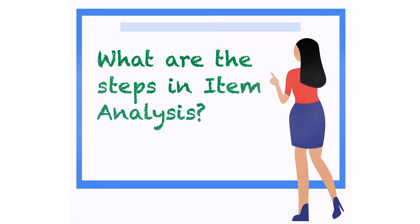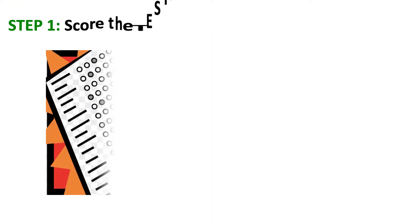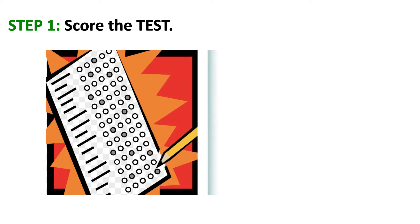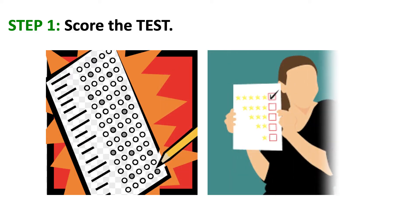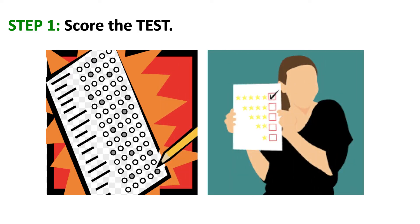So what are the steps in item analysis? Step 1: Score the test. For large-scale testing, answer sheets are usually scanned by a machine to capture test takers' item responses. Manual scoring is often done for classroom tests wherein the pupil's answers are checked against a prepared scoring key. They are considered correct for multiple choice items that matched the scoring key and obtained a 1-point credit.